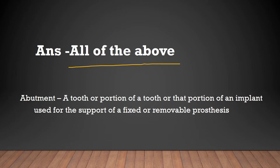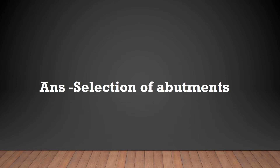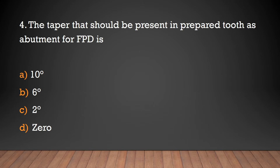Ante's law provides an aid for: selection of pontic, selection of connector, selection of retainers, or selection of abutments? The answer is selection of abutments. The taper that should be present in a prepared tooth as abutment for FPD is: 10 degrees, 6 degrees, 2 degrees, or 0 degrees?